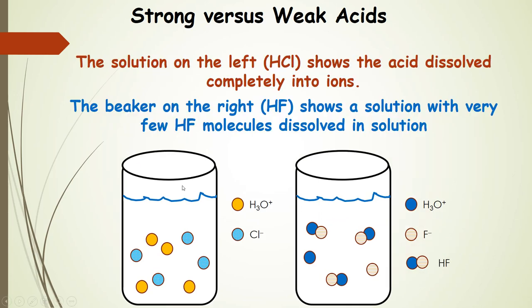What's different about these two is that the hydronium and chloride shown here — notice how all of the acid is dissociated. This is hydrochloric acid, so the H+ is stuck to a water molecule forming hydronium, and chloride anion is the anion for hydrochloric acid. Hydrochloric acid is a strong acid, meaning the acid dissolves completely into ions — 100% of them break up into ions.